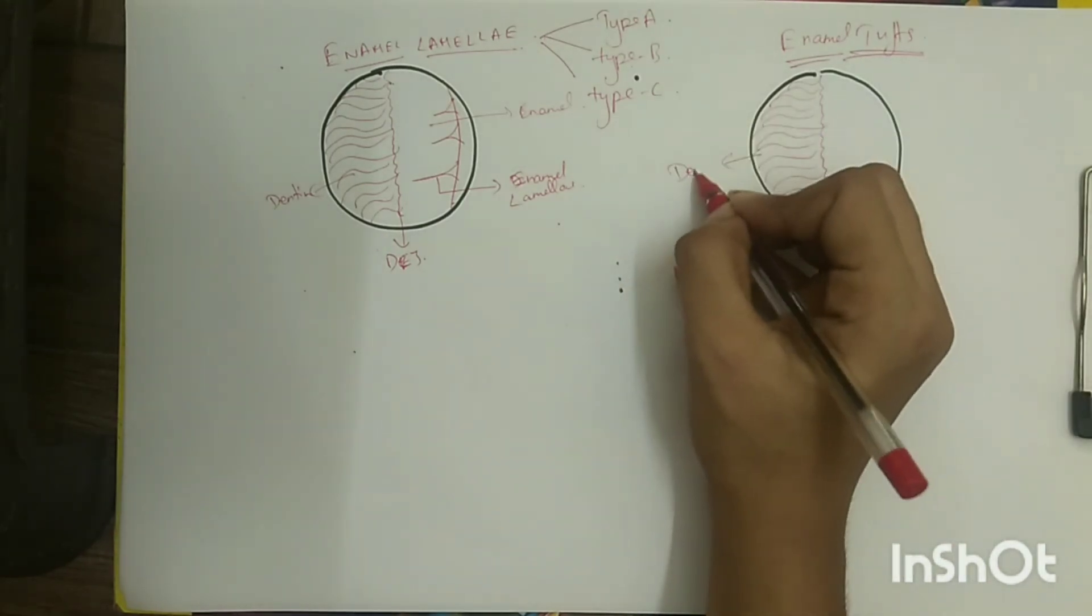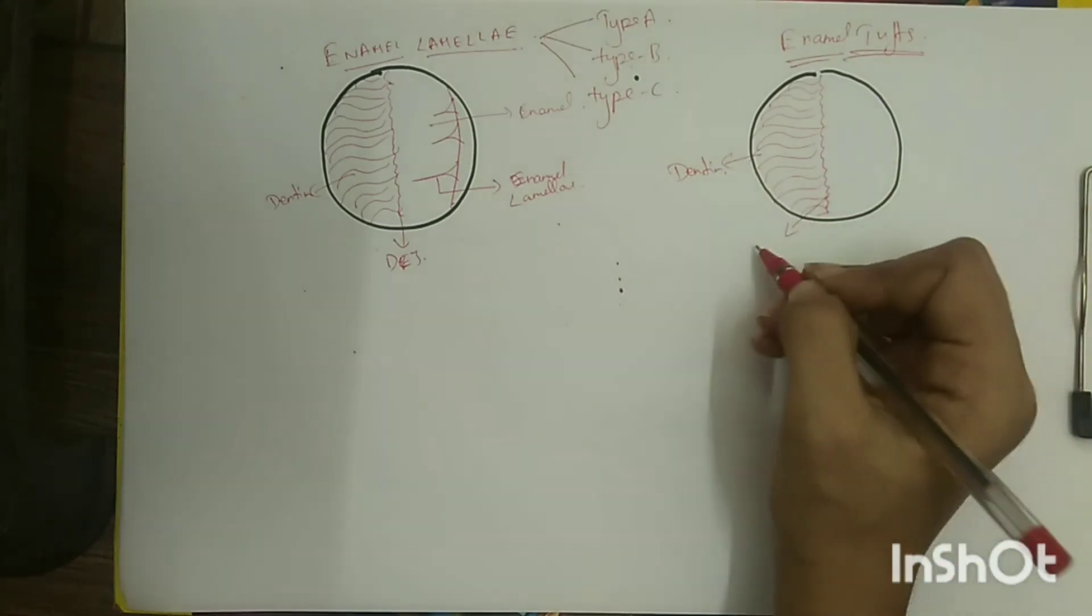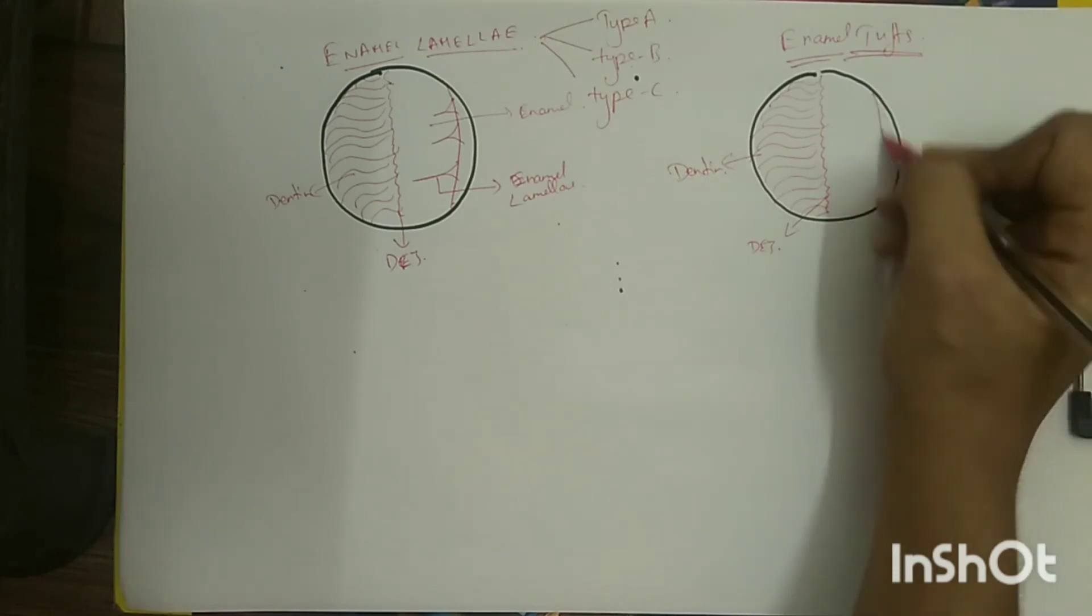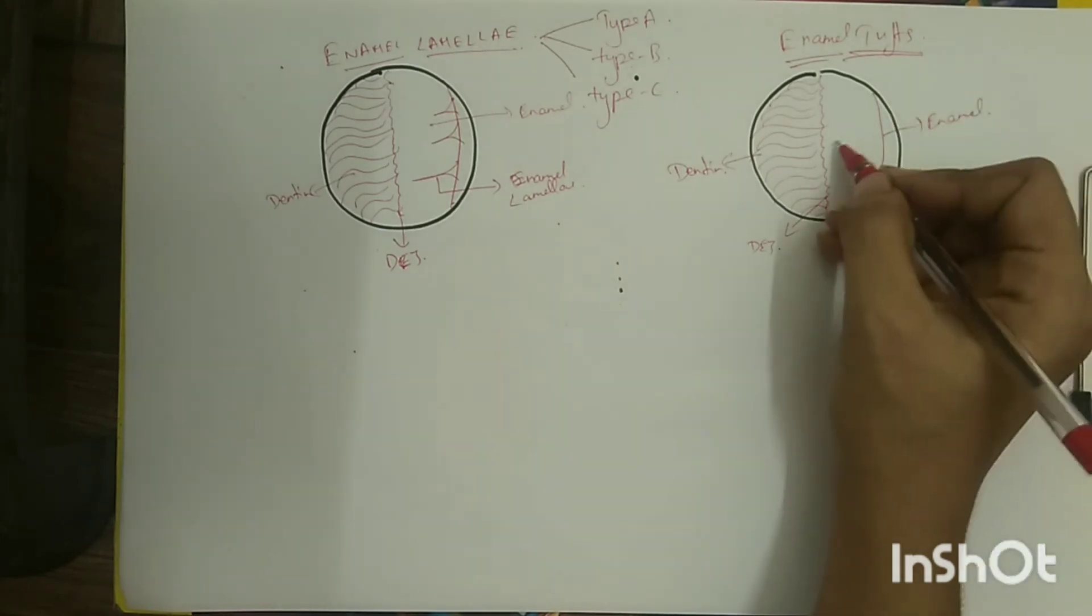enamel tufts lying in different planes and curving in different directions are projected in one plane, making them appear like a tuft of grass. Hence the name. However, they do not arise from a single stem as it appears. These structures are arranged in longitudinal direction and are best seen in horizontal or transverse section.